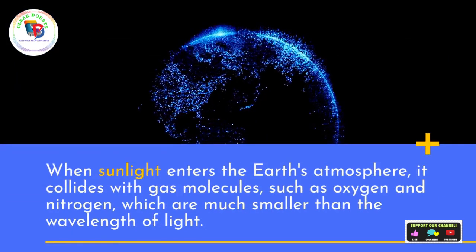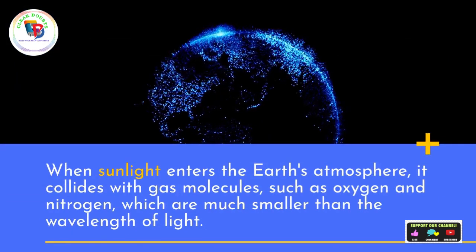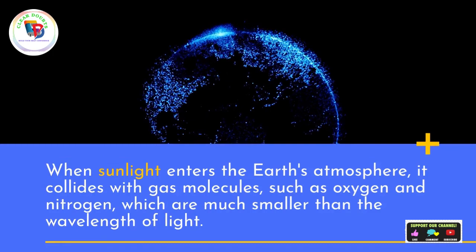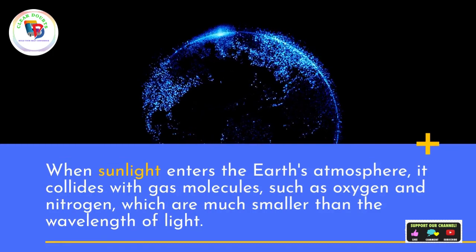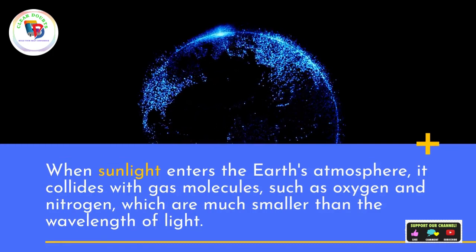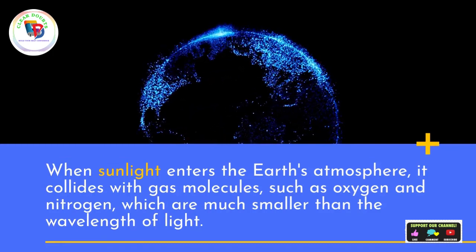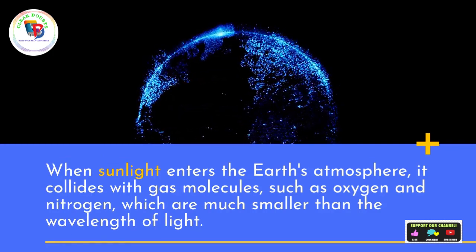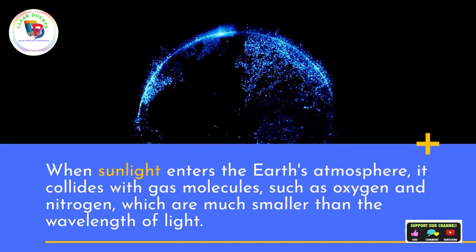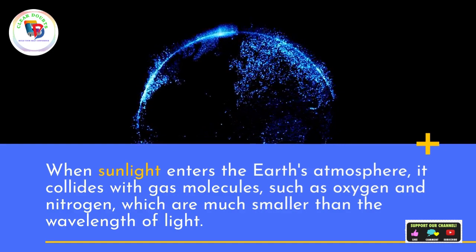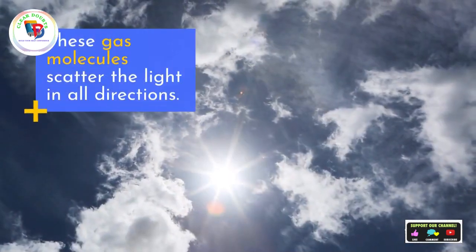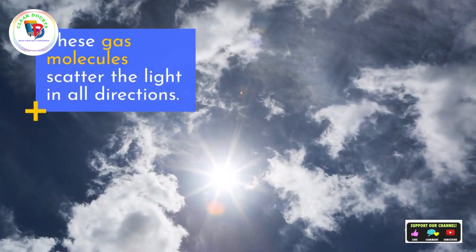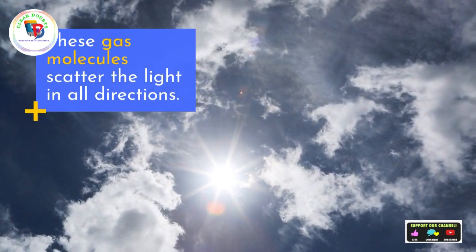When sunlight enters the Earth's atmosphere, it collides with gas molecules, such as oxygen and nitrogen, which are much smaller than the wavelength of light. These gas molecules scatter the light in all directions.